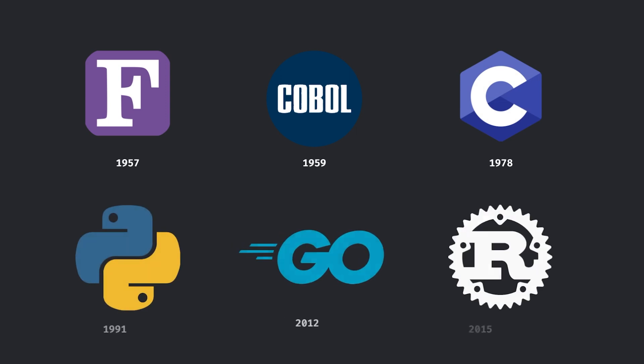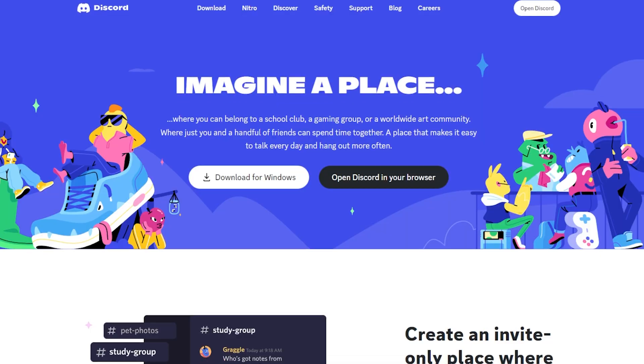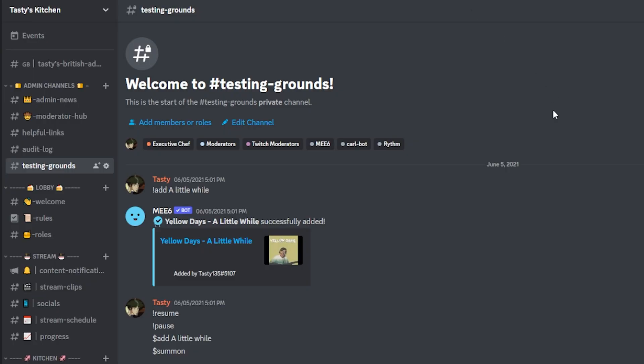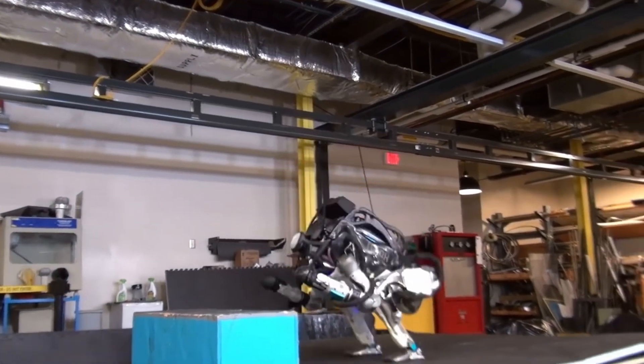The reason that defining programming like this is so important is because when you get into the field, there are so many programming languages, methodologies, and frameworks that get thrown at you and it can seem like an endless void. The professor emphasizes that while these tools change over time, they all boil down to the same process of translating to binary and telling a computer what to do. After many years of progress in this industry, programming can now build websites, web apps, desktop apps, robots, AI, and so much more.